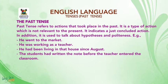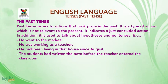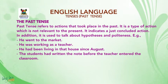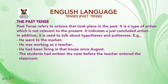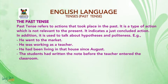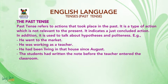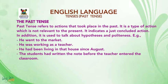Let's look at the definition of the Past Tense. It is used to refer to actions that took place in the past. It is a type of action which is not relevant to the present. It indicates a just concluded action. In addition, it is used to talk about hypothesis and politeness.